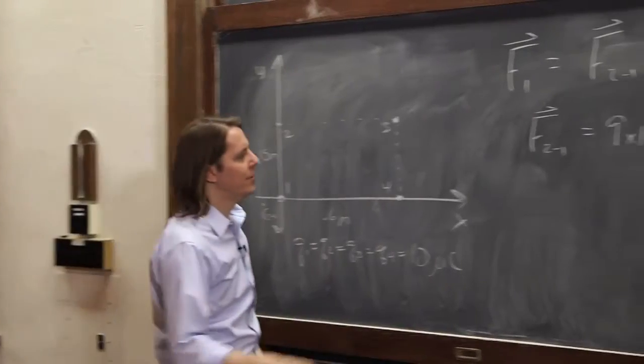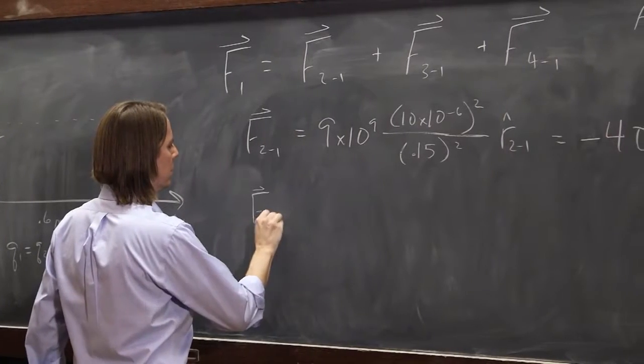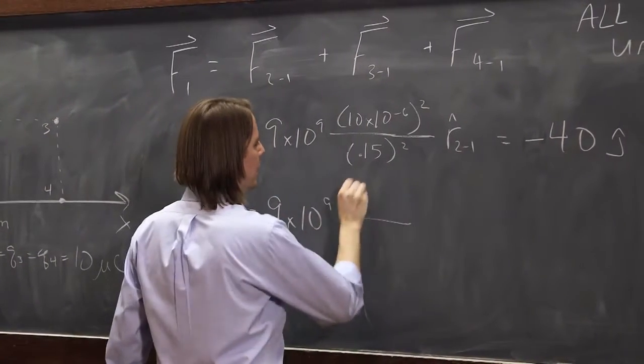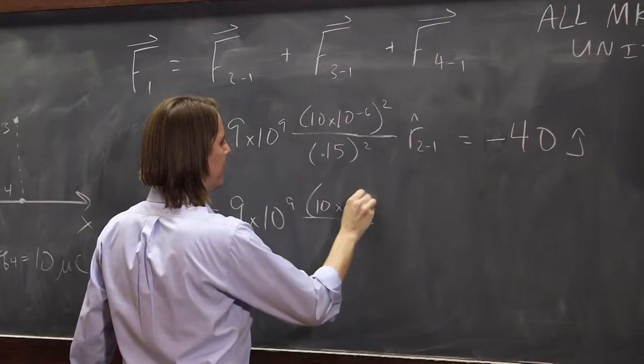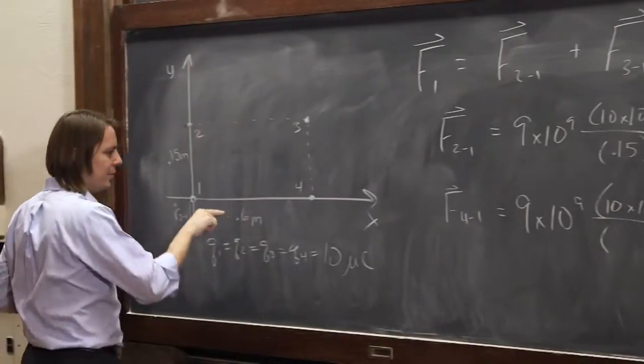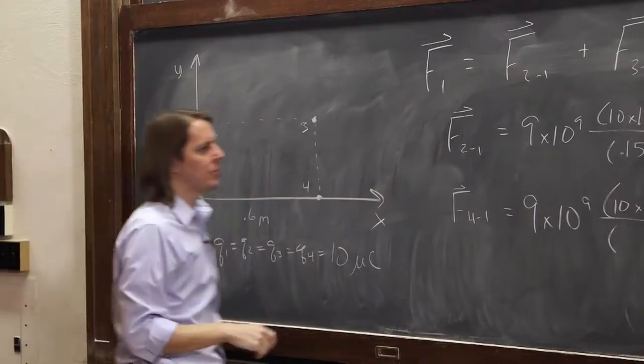We can also do very similar as F4,1. Equals 9 times 10 to the 9 times 10 times 10 to the minus 6. That's 10 microcoulombs squared. Over the separation for this one is 0.6, 4 to 1, 0.6 meters squared.